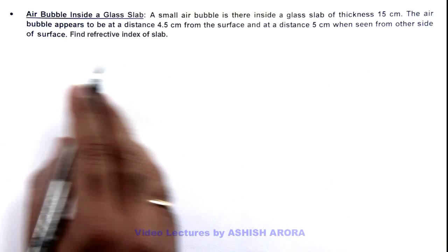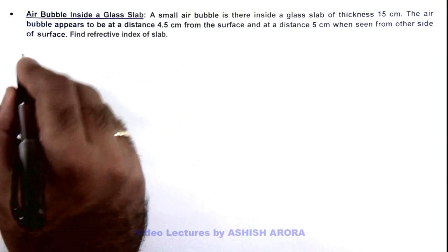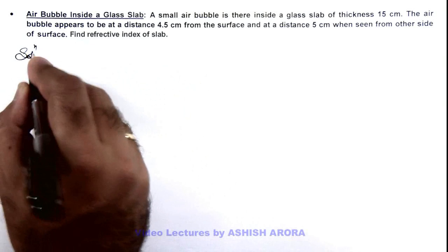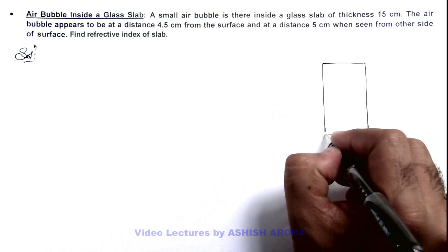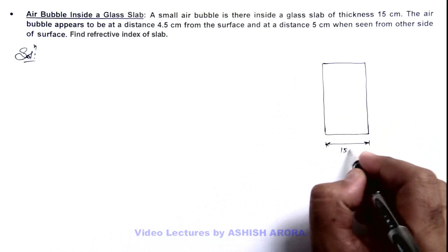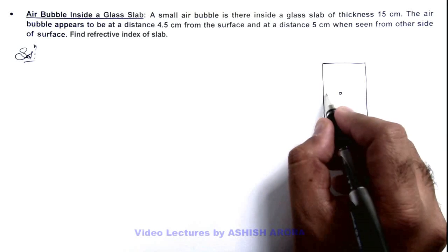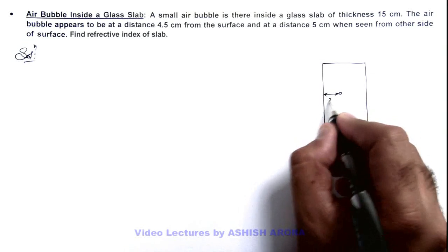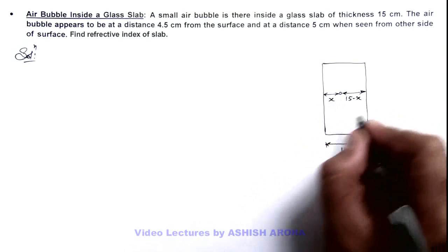We are required to find the refractive index of the glass slab. In solution, if we draw the picture of glass slab, the slab is 15 centimeter thick. There exists an air bubble which is located at a distance x from one surface and at a distance of 15 minus x from other surface.